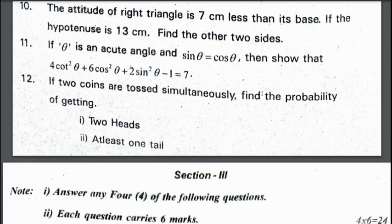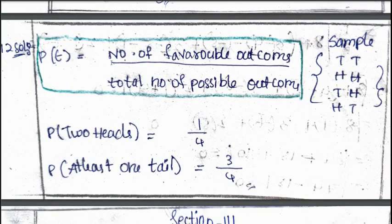If 2 coins are tossed simultaneously, find the probability of getting 2 heads and at least 1 tail. Formula for probability of any event: number of favourable outcomes by total number of possible outcomes. When 2 coins are tossed, the sample space will be {TT, HH, TH, HT}. P(2 heads): 2 heads will be only 1 favourable outcome, so 1/4. Total possible outcomes are 4, favourable outcomes are 1. At least 1 tail: here we have 1 tail, 2 tails, 3 tails. So total favourable outcomes are 3, possible outcomes is 4, so 3/4.